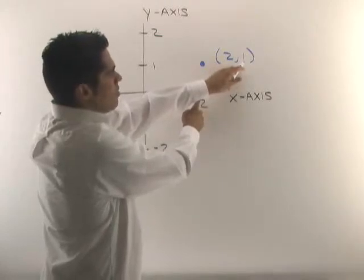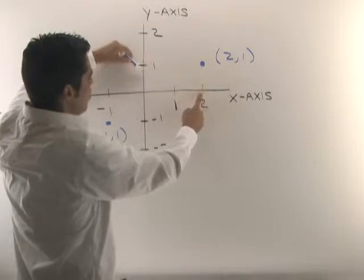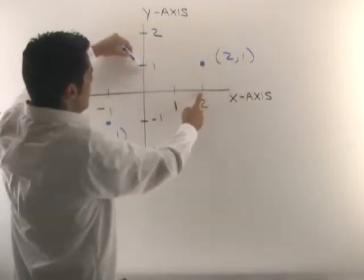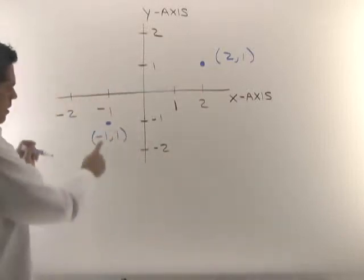unit up. So you go out two and up one, and there's the point. Here's another point, (-1,-1). To get here on the x-axis you move negative one, and then on the y-axis you